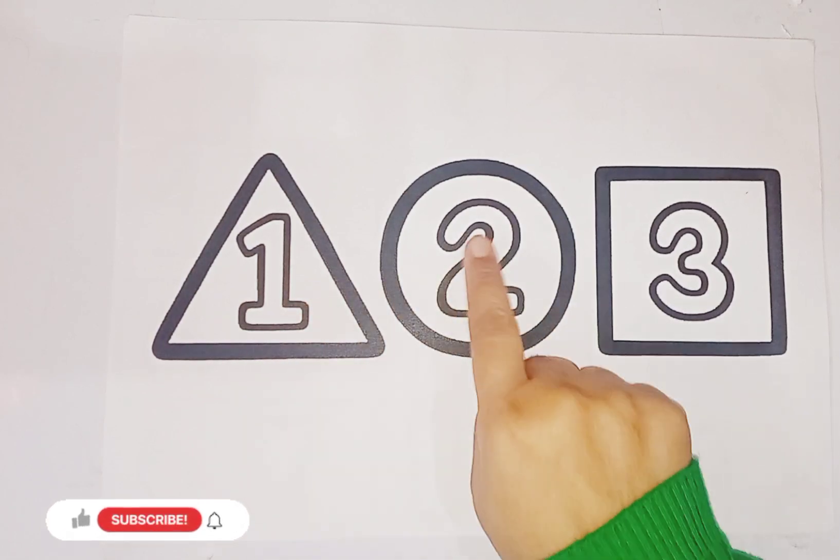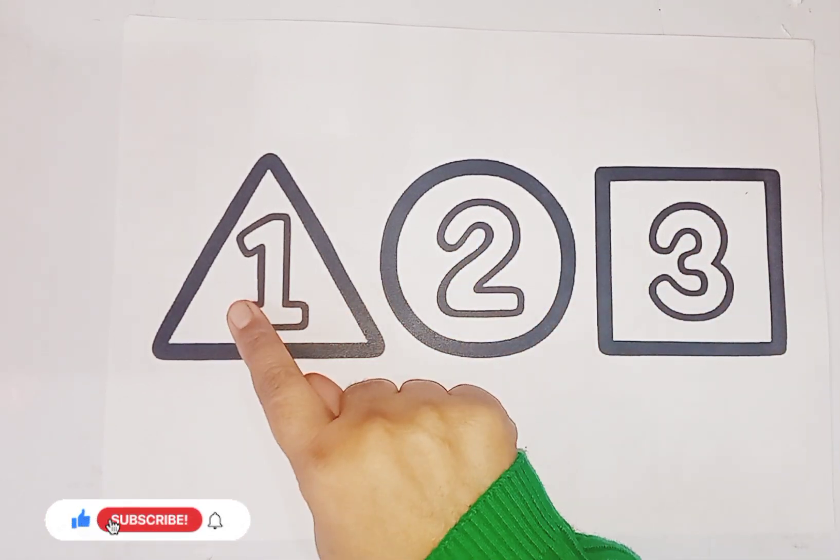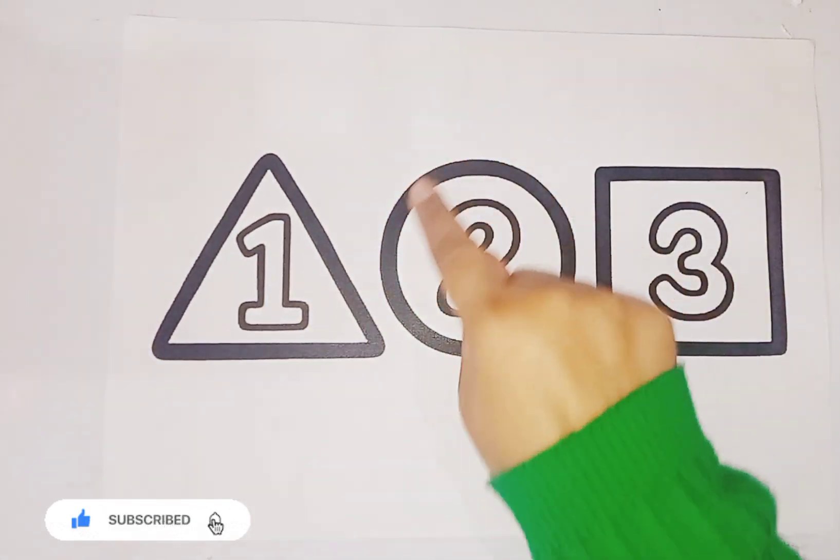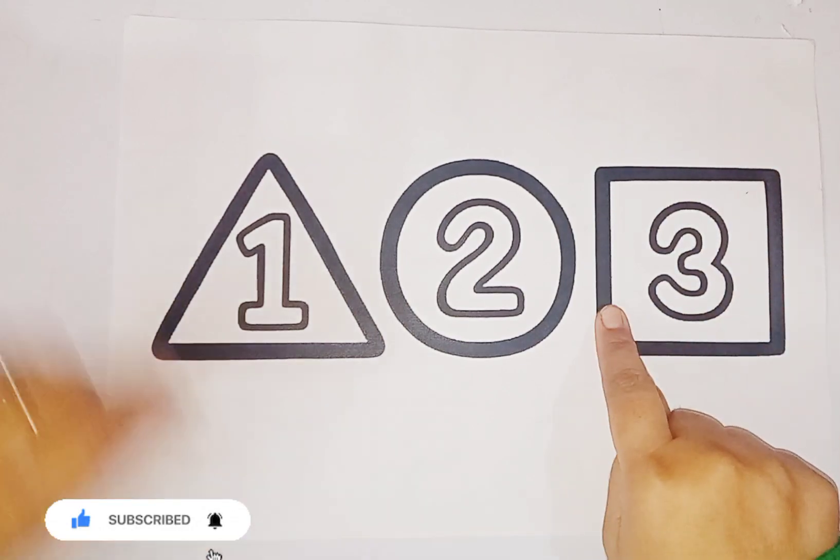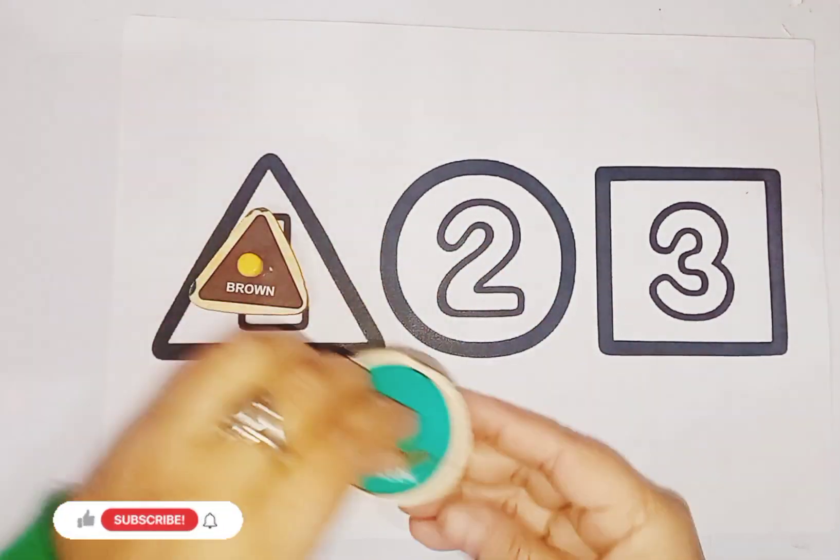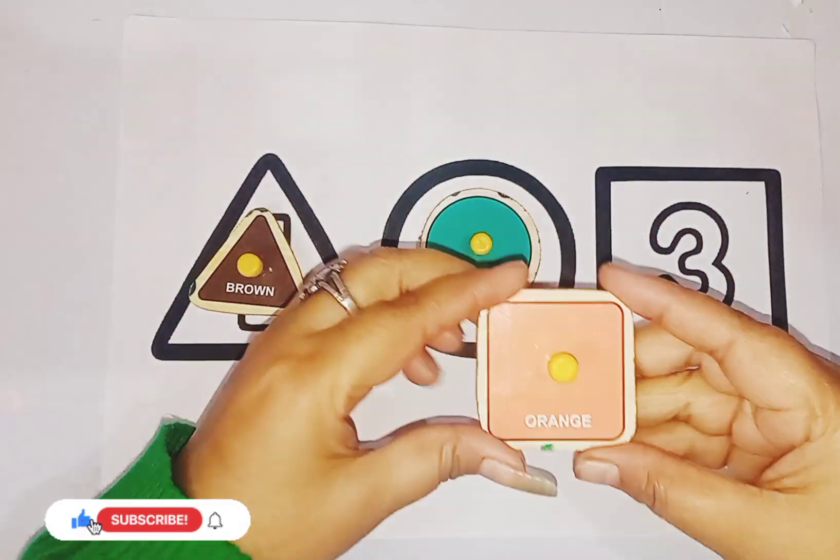This is number 1, number 2 and number 3. Shapes: Triangle, Circle, Square. This is triangle, this is circle and this one is square.